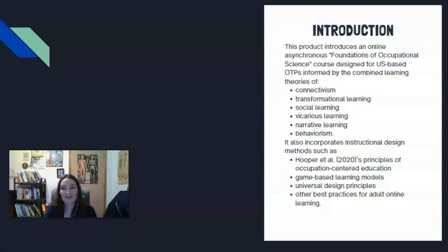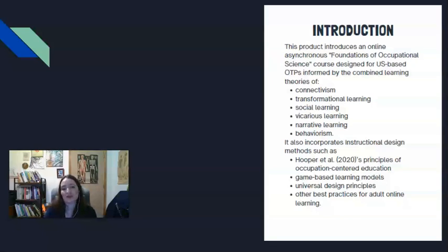This project seeks to address this literacy gap through the creation of an online foundations of occupational science course designed specifically for US-based OTPs. It is informed by the combined utilization of the following learning theories: connectivism, transformational learning, social learning, vicarious learning, narrative learning, and behaviorism.